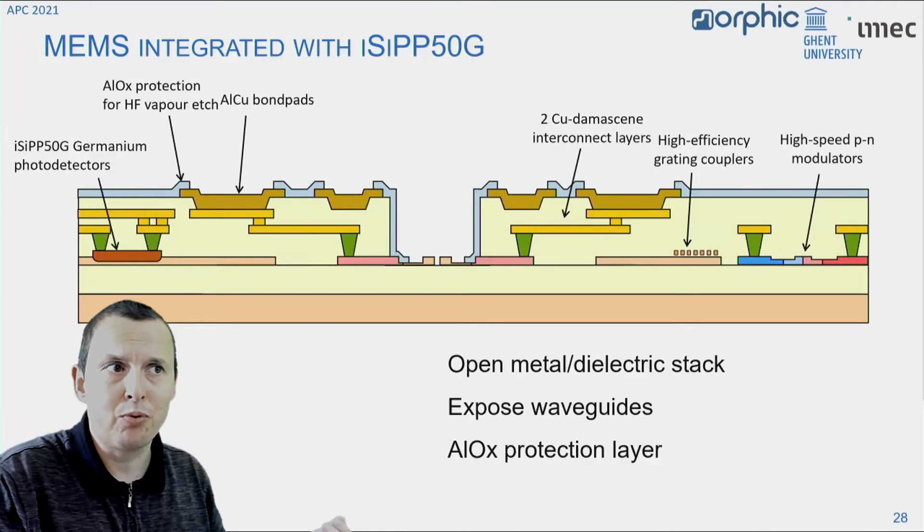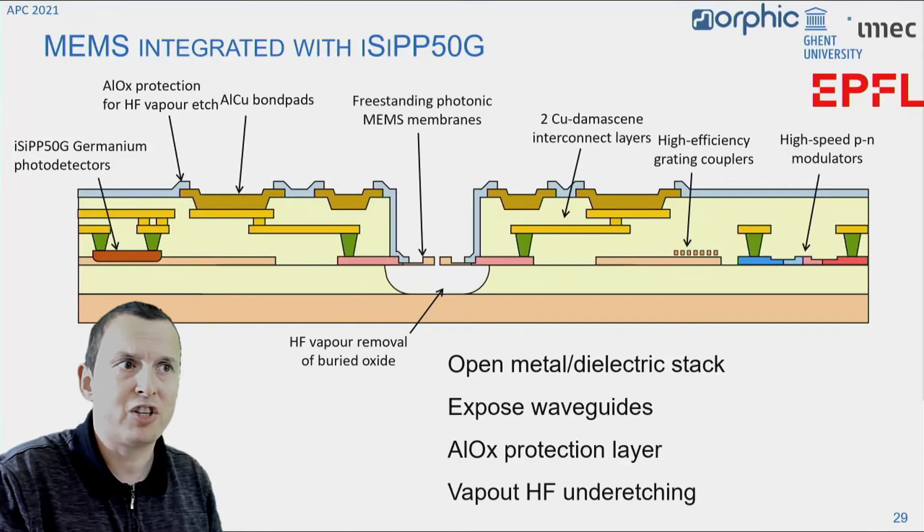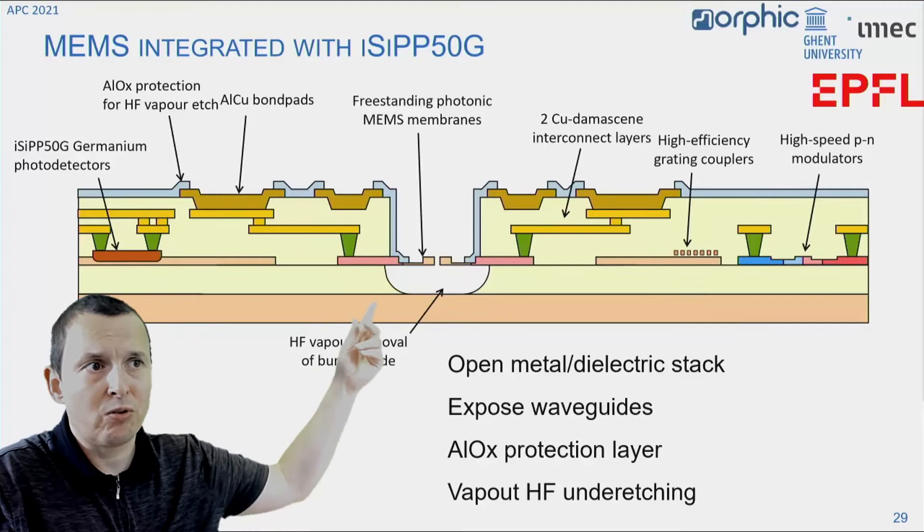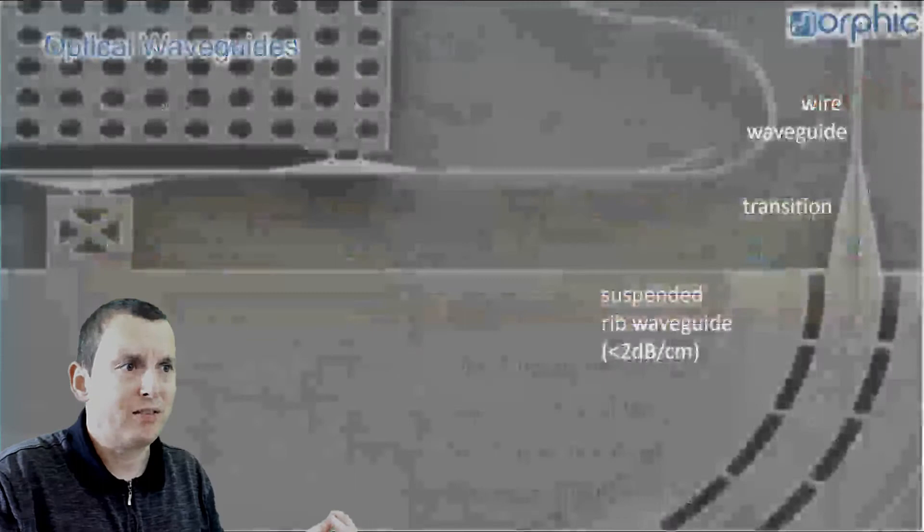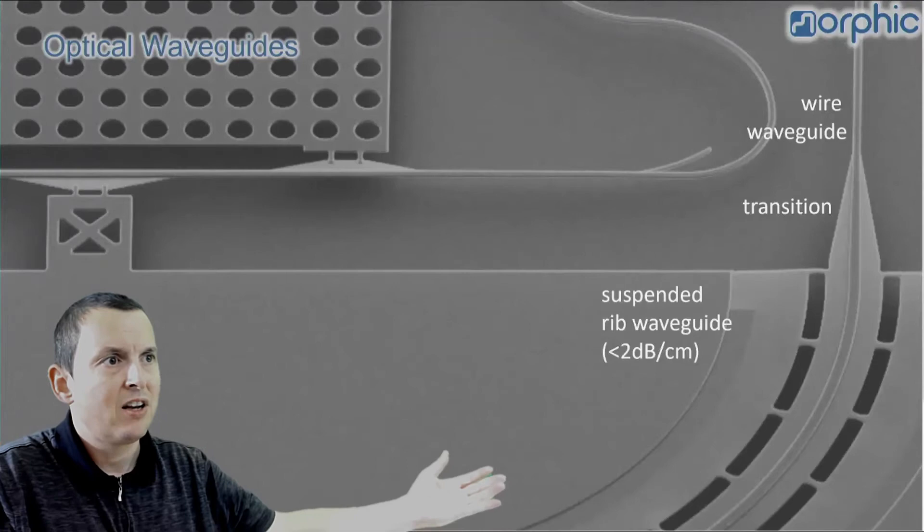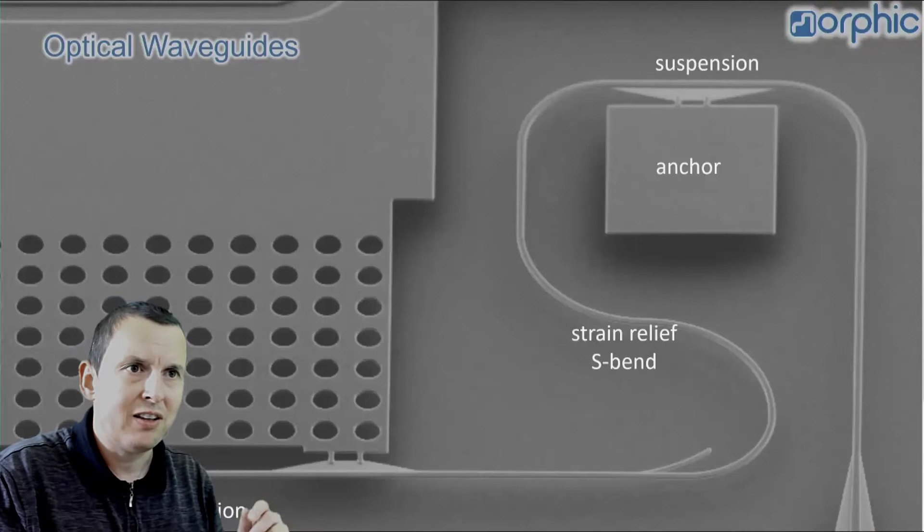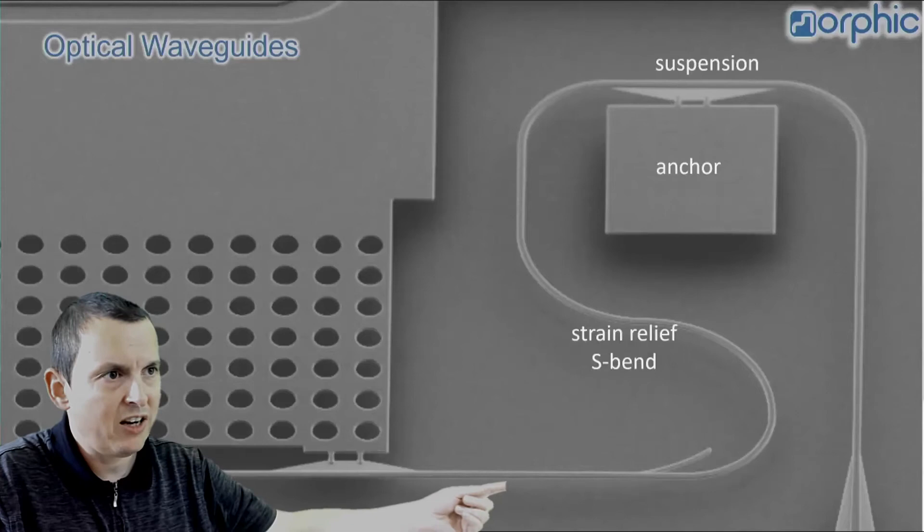The challenge of these actuators, however, is to integrate them together with all the other functions in the silicon photonics platform. If you look at a standard silicon photonics platform, you see that the waveguides are encapsulated with a dielectric and metal stack that takes care of all the electrical wiring. So if you want to make these waveguides movable, you would have to open this dielectric stack and then basically protect all the other functions because the next step would be to release these waveguides using a very aggressive vapor HF etch.